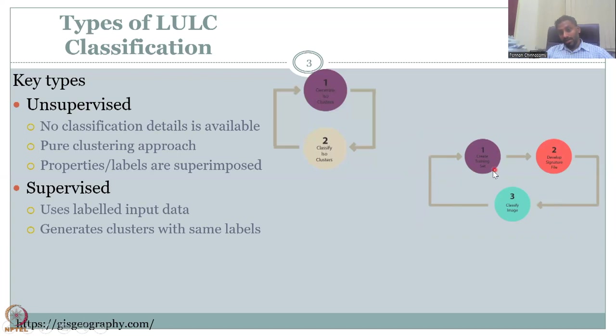So here, as I said, we start with create a training set, which is I will say green is equal to agriculture. Blue is equal to water. Red is equal to a damaged crop. So I create that bank or training set. Then I give it to the computer or the program GIS program, QGIS, and then develop the signature file. So this is called the signature file or a file that has what color represents what.